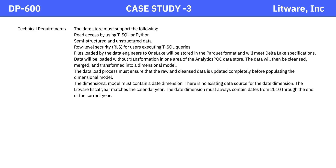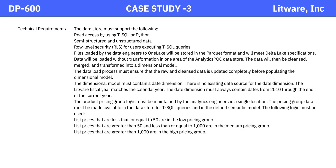The dimensional model must contain a date dimension, and there is no existing data source for the date dimension. The Litware fiscal year matches the calendar year. The date dimension must always contain dates from 2010 through the end of the current year. The product pricing group logic must be maintained by the analytics engineers in a single location. The pricing group data must be made available in the data store for T-SQL queries and in the default semantic model. List prices less than or equal to 50 are in the low pricing group; greater than 50 and up to 1,000 are medium; greater than 1,000 are high.